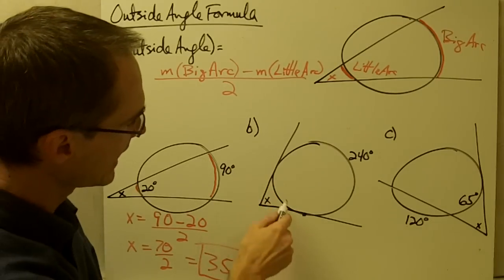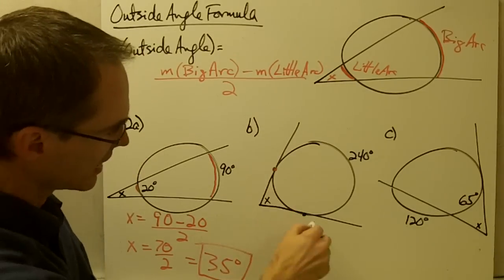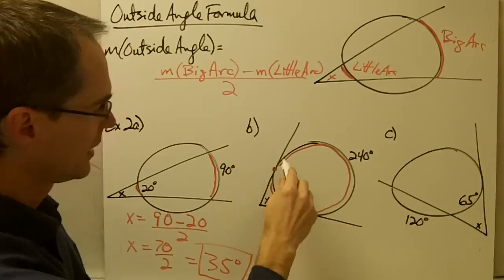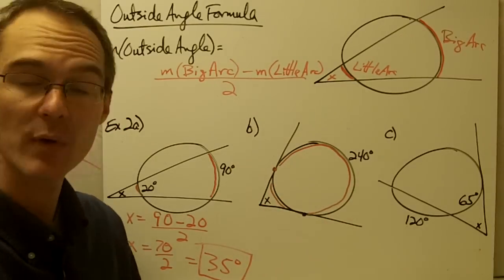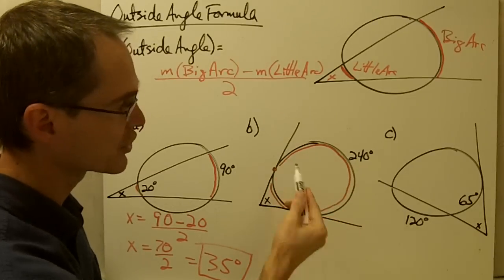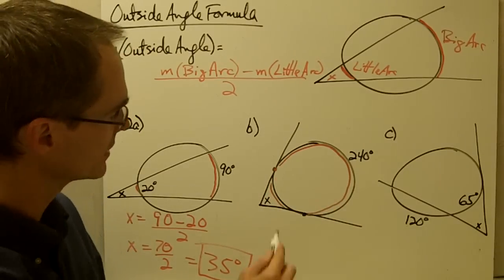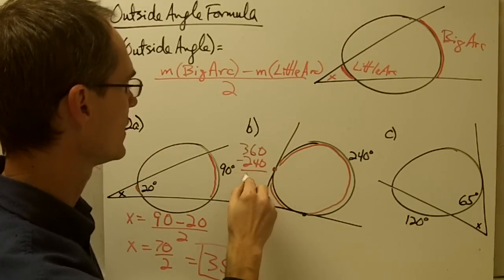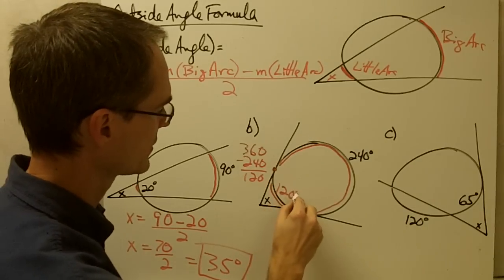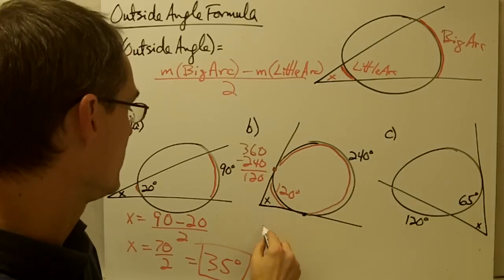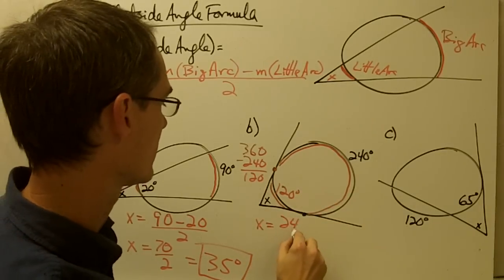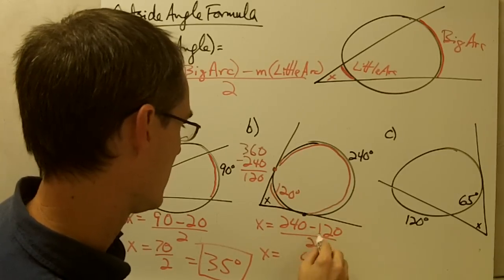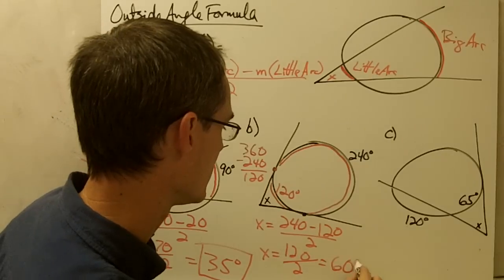Example 2b: here I have two tangent lines intersecting outside the circle, still giving me two arcs — a big arc and a little arc. I only have the measure of the big arc, which is 240. But since the total arc measure of a circle is 360 degrees, the little arc must be 360 minus 240, which is 120. Plugging into the outside angle formula: 240 minus 120 is 120, divided by 2, which is 60 degrees.